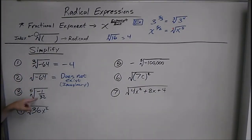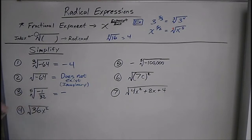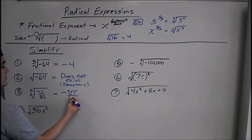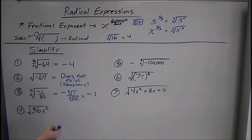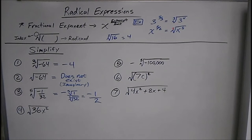Say we have the 5th root of negative 1 over 32. Since it's a 5th root, we're allowed to have a negative, and we're going to get a negative answer. We're looking for 5 things that multiply to equal 1 over 32. You could break this up: the 5th root of 1 over the 5th root of 32. 1 to the 5th is 1, and 2 to the 5th is 32. So our answer would be negative 1 half.